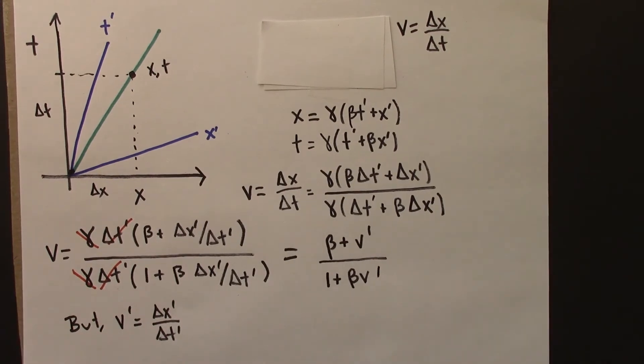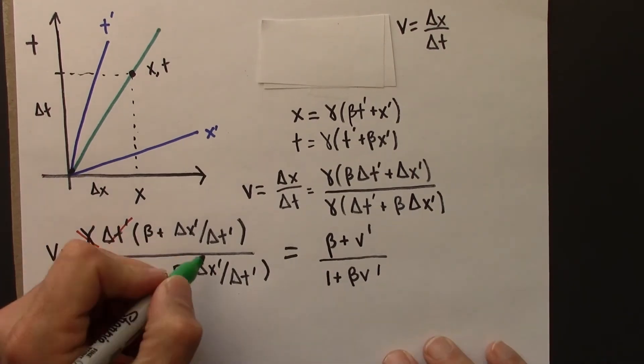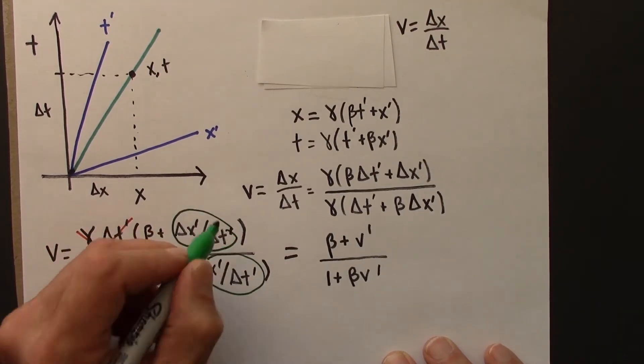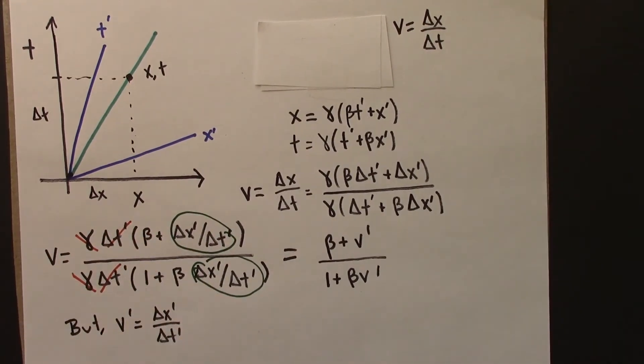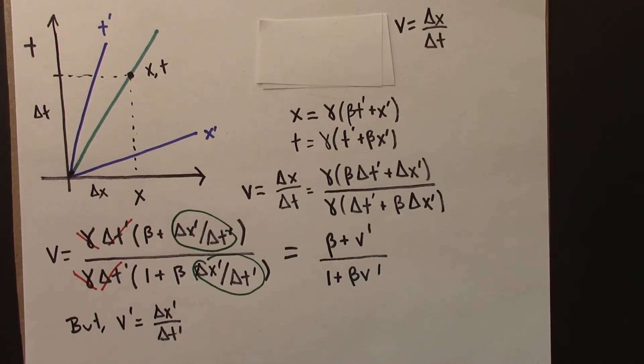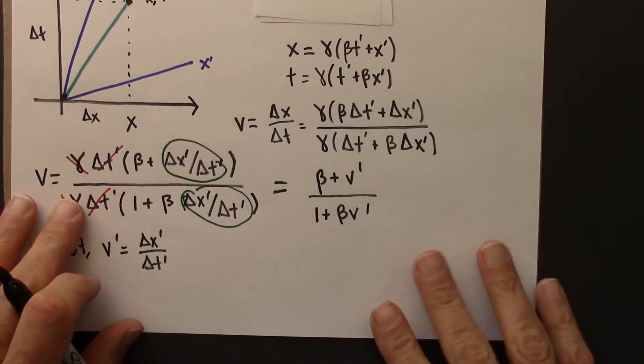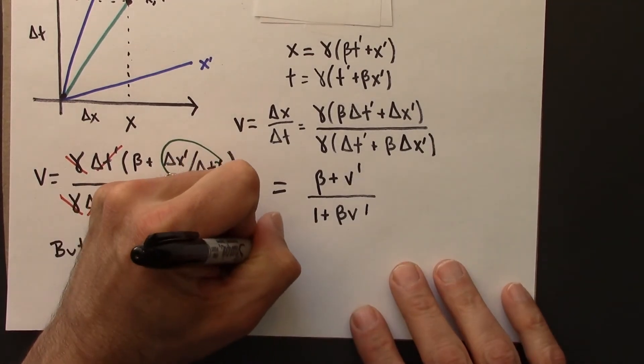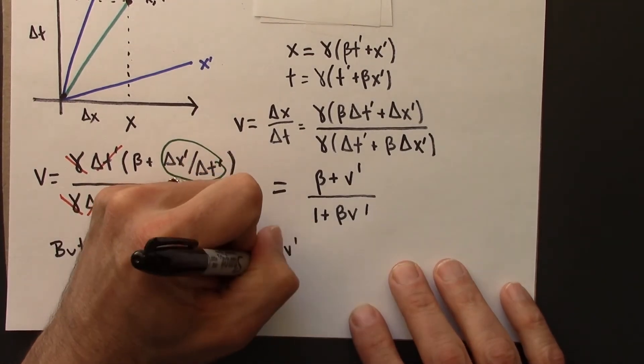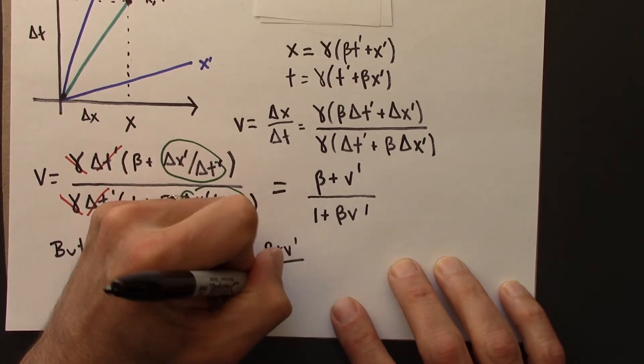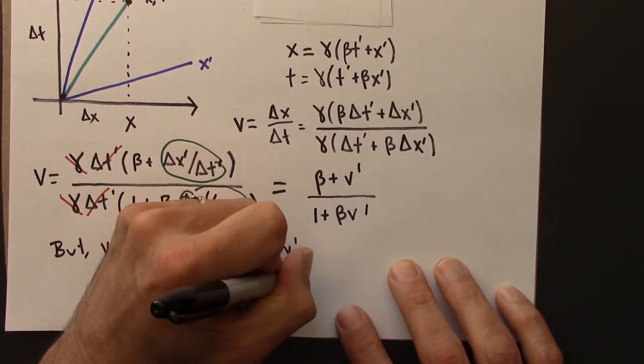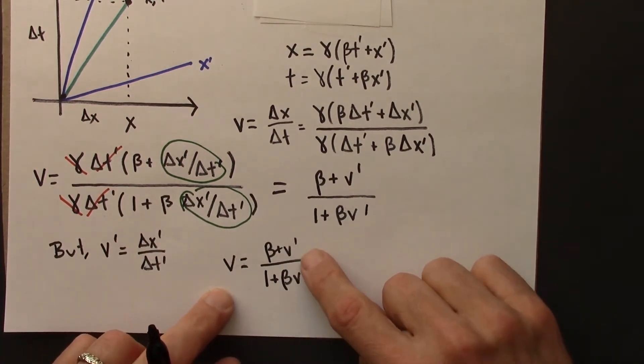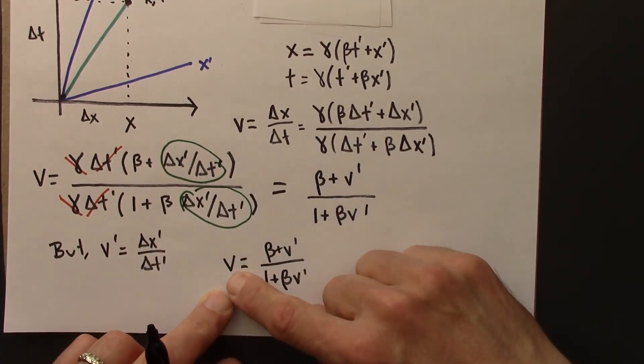So I just, each of these terms that I just circled poorly in green, those are v primed because of this. So the end result is that v, I'm just going to write this over, is beta plus v primed over 1 plus beta v primed.